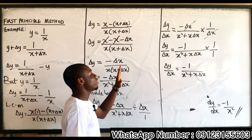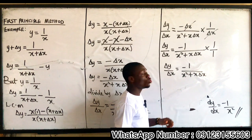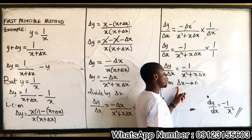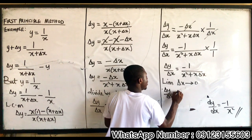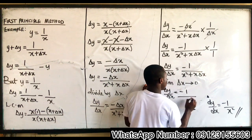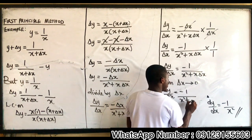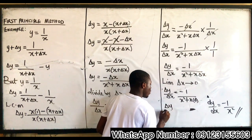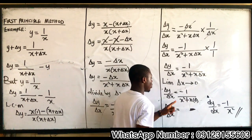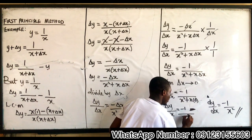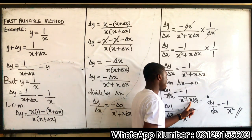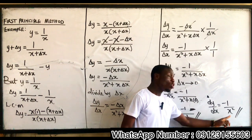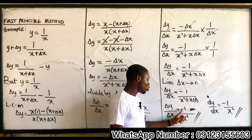After dividing by Δx, we still have Δx remaining, so we take the limit as Δx approaches 0. Substituting Δx equals 0, we have dy/dx equal to negative 1 over (x squared plus x times 0), which gives dy/dx equal to negative 1 over x squared. So both the general method and the first principle method give the same answer: negative 1 over x squared.